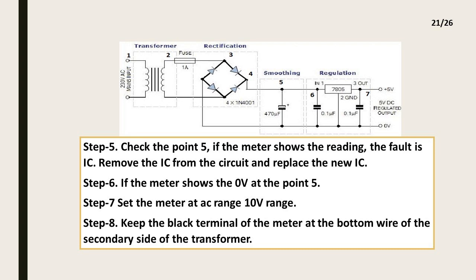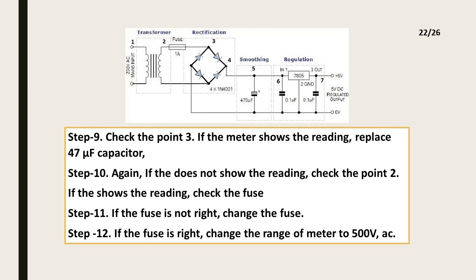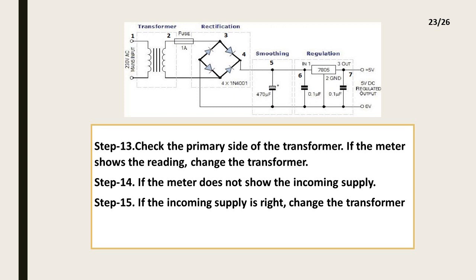Step 10: If the meter does not show a reading, check point 2. If it shows a reading, check the fuse. Step 11: If the fuse is not right, change the fuse. Step 12: If the fuse is right, change the meter range to 500 volt AC. Step 13: Check the primary side of the transformer — if the meter shows a reading, change the transformer. Step 14: If the meter does not show the incoming supply, Step 15: If the incoming supply is right, change the transformer.